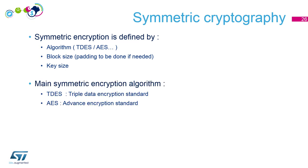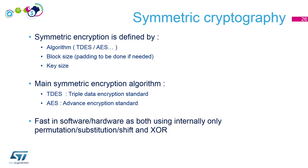The main encryption algorithms we will see together are Triple DES (Triple Data Encryption Standard) and AES (Advanced Encryption Standard). These are fast in both software and hardware because internally they only use permutation, substitution, shift, or XOR — operations a microcontroller or any computer can do very quickly.